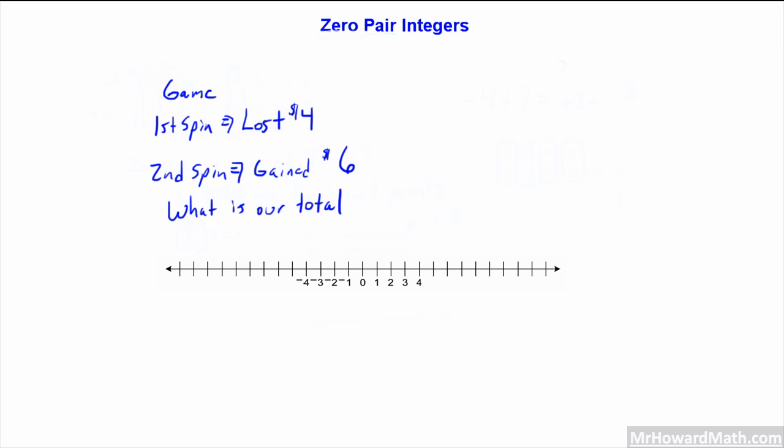Let's model this with integers. First, let's attach an integer to each spin. We lost $4, so that is a negative number, negative 4. On the second spin, we had a gain of $6, so we model that with a positive 6. Let's find out what our total was. We have a negative 4 combined with a positive 6. What's the total? Pretty soon you'll be able to do something like this in your head, but we're going to work with zero pairs. I caution you with doing anything in your head because that offers the opportunity to make mistakes.